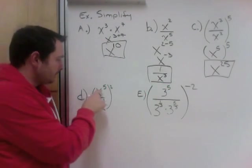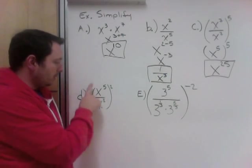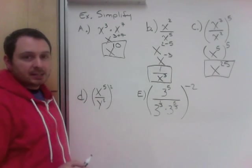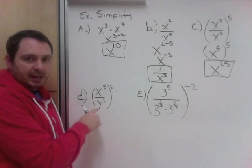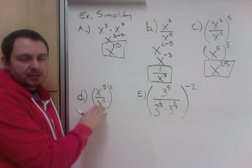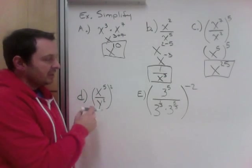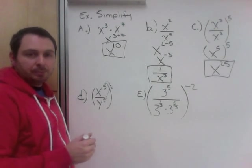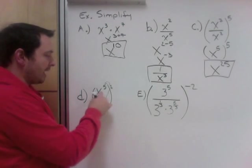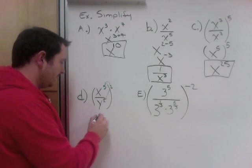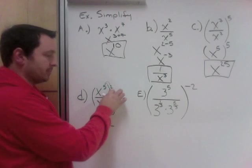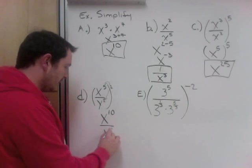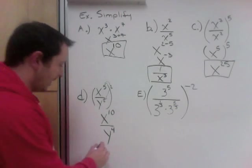Next: x to the power of 5 divided by y squared, all squared. The inside has different bases — x and y — so we cannot simplify the inside any further. But to simplify, we generally want to get rid of brackets. This 2 outside can make its way inside using the power law: powers of powers means multiply. x to the 5th squared gives 5 times 2 equals 10. y squared squared gives 2 times 2 equals 4. So I get x to the power of 10, y to the power of 4.